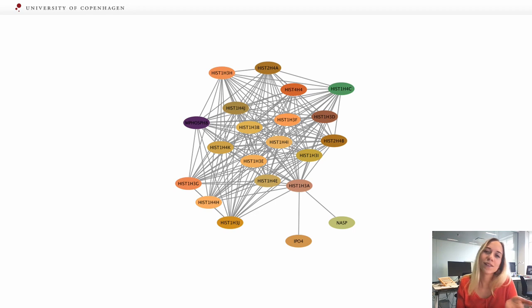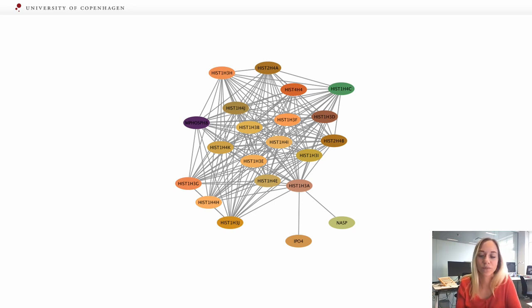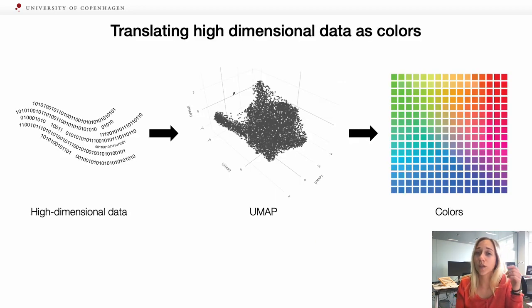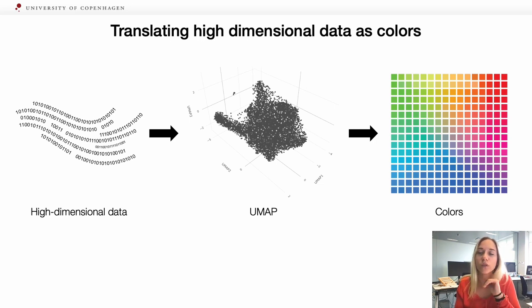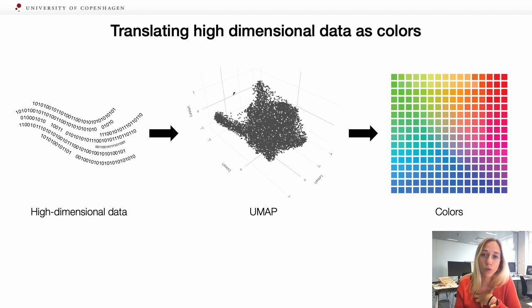Since single cells don't have one dimension, we couldn't use a color gradient. What we could do was, first of all, to reduce dimensionality. And for that, we used UMAP.